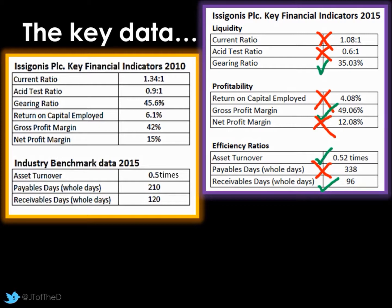Our asset turnover is about the same as the industry average. Our payable days are interesting — this is how long it takes us to pay our suppliers. The industry average is 210 days, but we're taking 338 days, which is significantly longer and worrying. Our receivable days relate to Service 100. The industry average is actually 120 days — customers taking four months to pay — so other companies may be using similar arrangements, meaning it may not be as strong a USP as believed. For us, we're at 96 days, which is within our 100-day limit, with some scope to take that further.